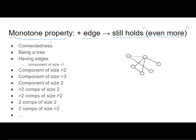Let's go through some examples. Connectedness: if a graph is connected and you add an edge, will it remain connected? Yes — it's already connected, and adding an edge can only increase connectivity. Being a tree: is that monotone? No. If I add an edge, I may create a cycle, so that's not a monotone property.